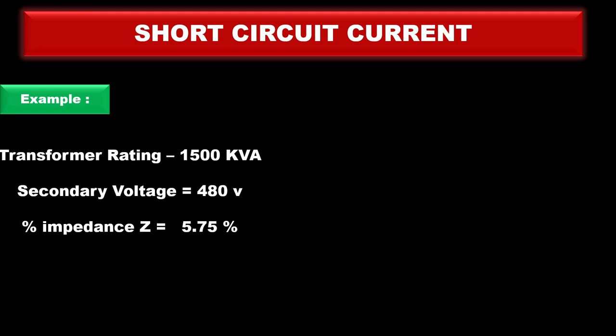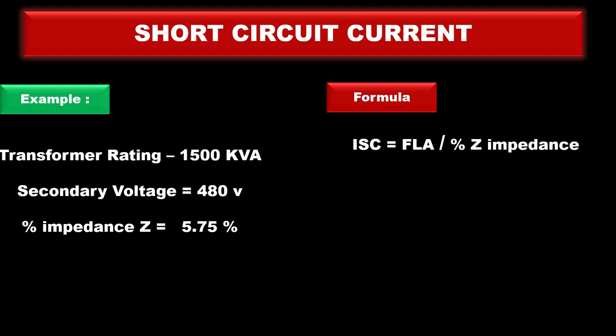Put these values in the formula. The formula of short circuit current is full load ampere divided by percent of Z impedance. Z is the symbol of impedance.